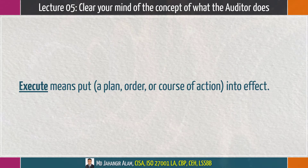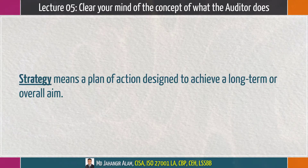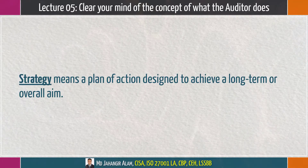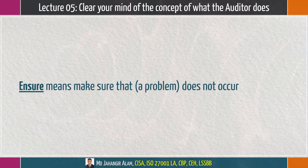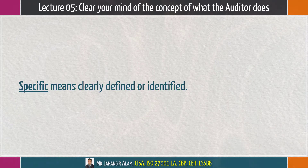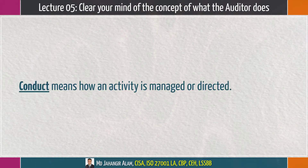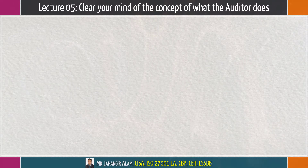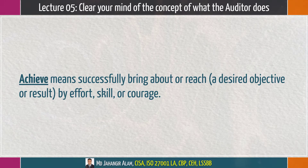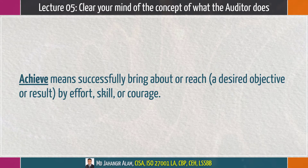Execute means to put a plan, order, or course of action into effect. Strategy means a plan of action designed to achieve a long-term or overall aim. Ensure means to make sure that a problem does not occur. Specific means clearly defined or identified. Conduct means how an activity is managed or directed. Achieve means successfully bringing about or reaching a desired objective or result by effort, skill, or courage.